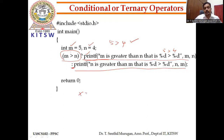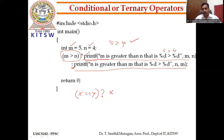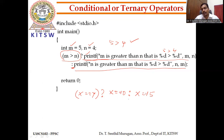You can also write expressions with the ternary operator. For example: if x equals equals y, question mark, assign x equal to 10; colon, if condition is false, assign x equal to 15. We use the ternary symbol with question mark and colon.